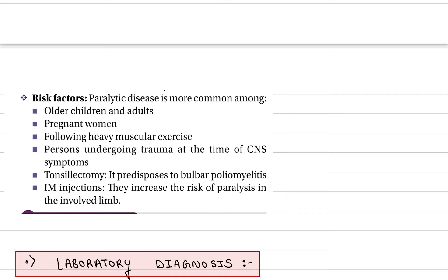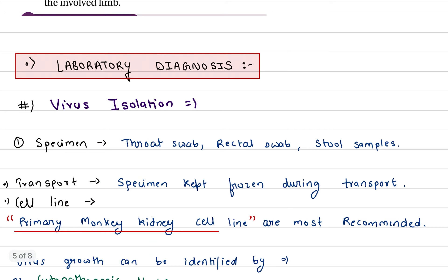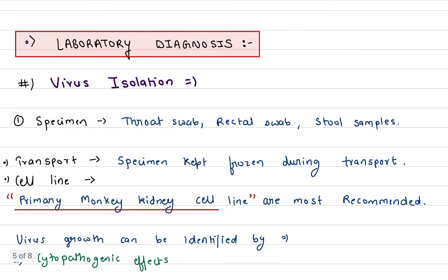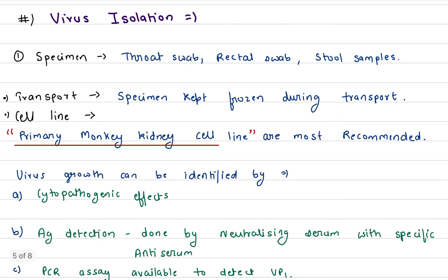Risk factors: paralytic disease is more common among older children and adults, pregnant women, following heavy muscular exercise, persons undergoing trauma at the time of CNS symptoms, tonsillectomy, and IM injections. Laboratory diagnosis: very easy. First, we can see virus isolation. You can take specimen like throat swab, tracheal swab, and stool samples.